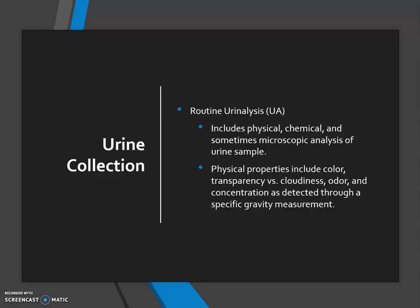In the routine urinalysis, physical, chemical, and sometimes microscopic analysis of the urine sample is performed. Physical properties include color, transparency versus cloudiness, odor, and concentration detected through specific gravity. We might see urine that is green, purple, very pale yellow, or dark yellow. When we open the container, we note any odor. Color changes can also be due to medications the patient is taking.